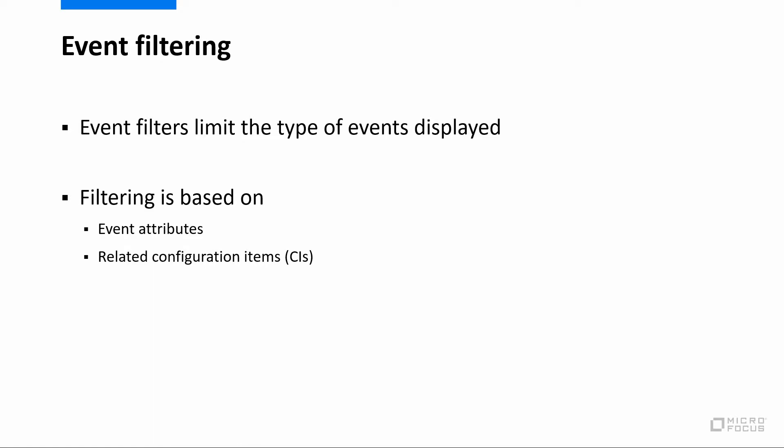Event filtering enables you to limit the type of events displayed in the event browser. You can define criteria to filter events according to severity, title, and ownership. You can also filter according to the configuration item in the events by selecting a view or a specific CI.